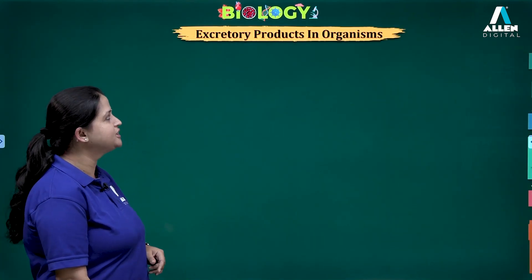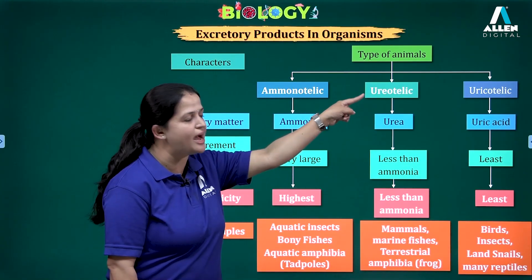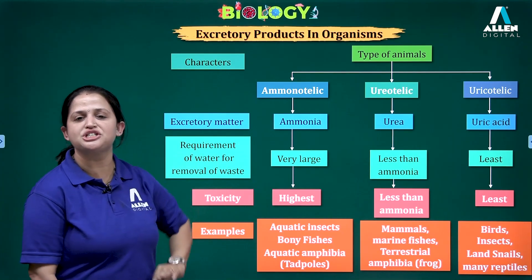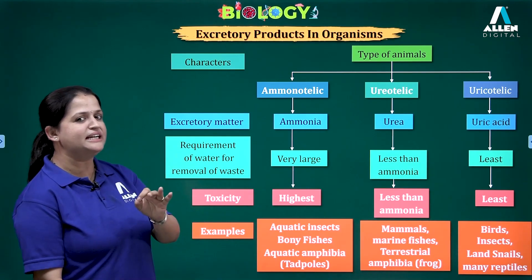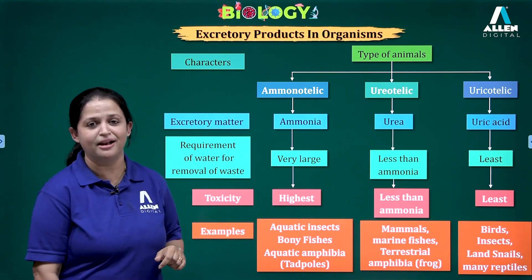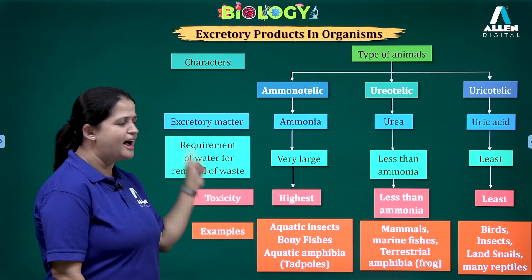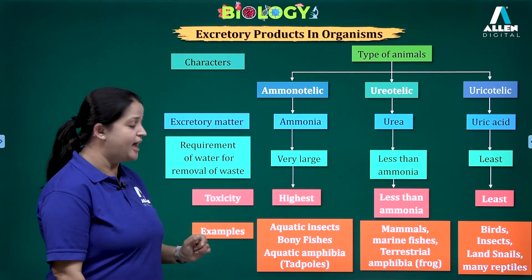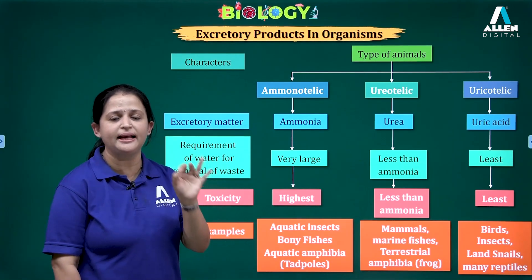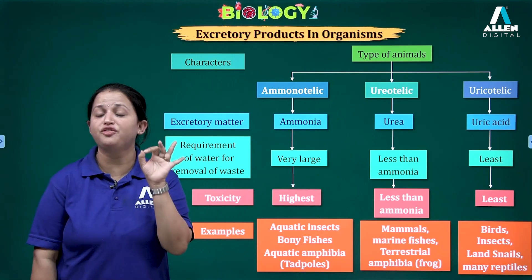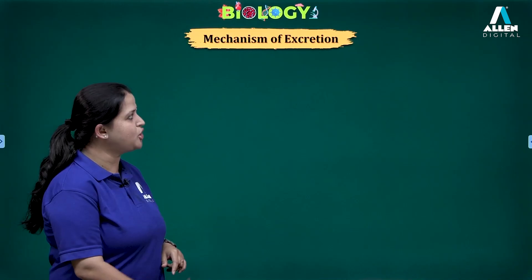So there are three total types of animals: ammonotelic, ureotelic, and uricotelic. Comparing this chart, ammonia is most toxic and highly toxic, the least toxic is uric acid in uricotelic animals. The requirement of water to remove ammonia is highest and very least for uricotelic. All examples for the different types are very important for your NEET curriculum and you have to practice these examples for the NEET exam.